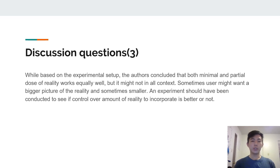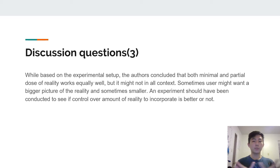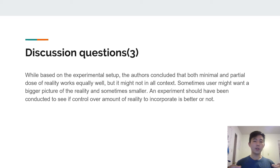The last discussion question is that the authors concluded that minimal and partial doses of reality work equally well, but this might not hold in all contexts. Sometimes a user might want a larger portion of reality incorporated into the virtual world, and sometimes smaller. An experiment should have been conducted to give users control over the amount of reality they want blended in, to see whether giving users that ability is a better approach. Thank you.